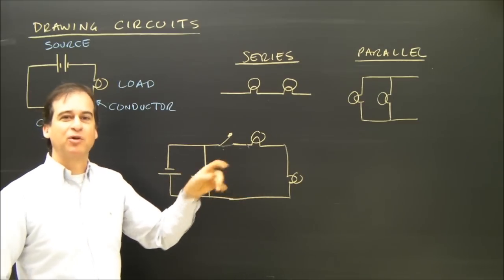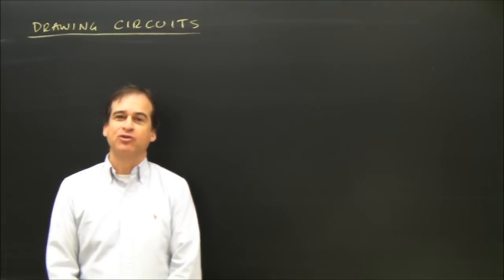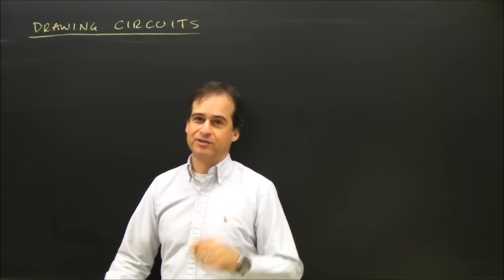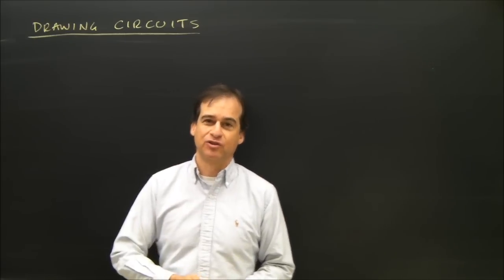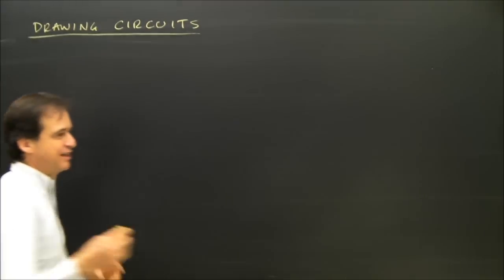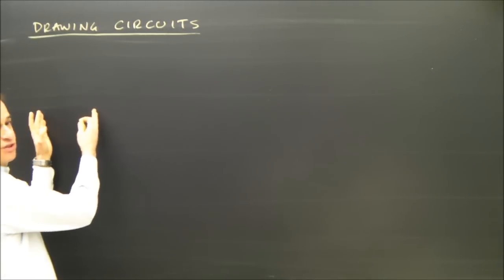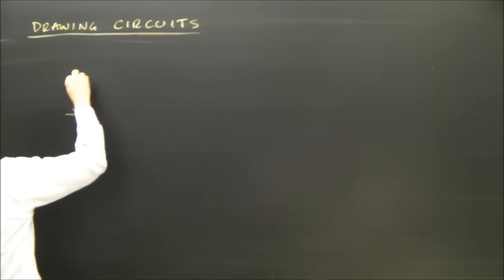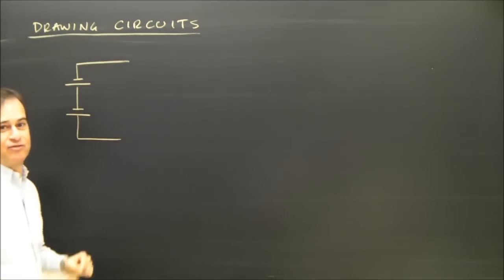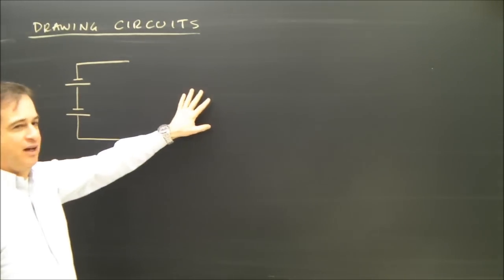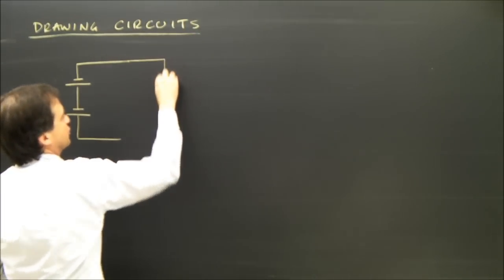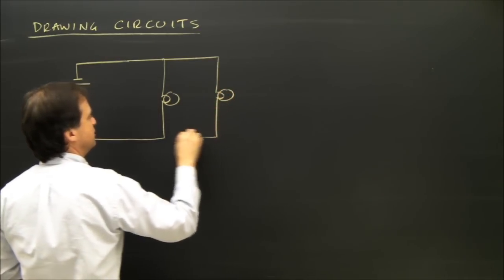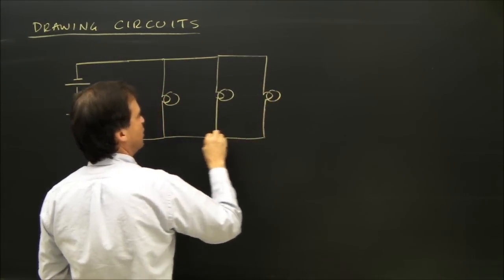Now I'm going to clean this up, and we're going to draw a couple more circuits. I'm going to draw a circuit with two cells in series, and three light bulbs in parallel, and some switches to turn the bulbs off individually, and one to turn the whole circuit off. So I need two cells in series — I'm going to put the source over here and the load over here. Series means one after the other. And on this side, I'm going to put three bulbs in parallel — there's one bulb, there's the other, and there's the third.